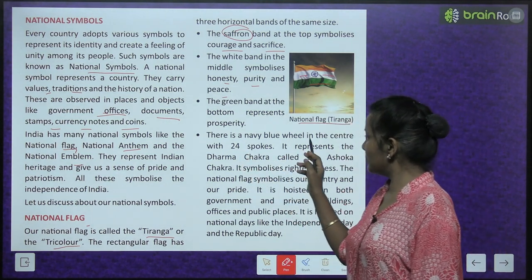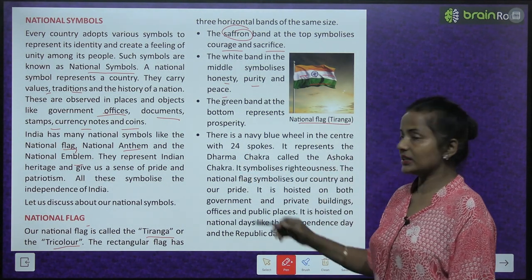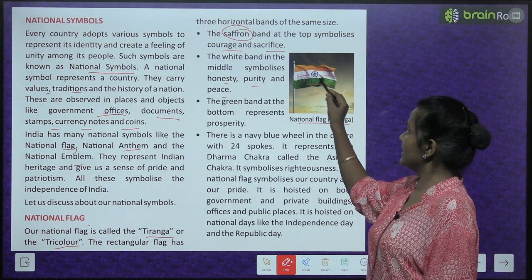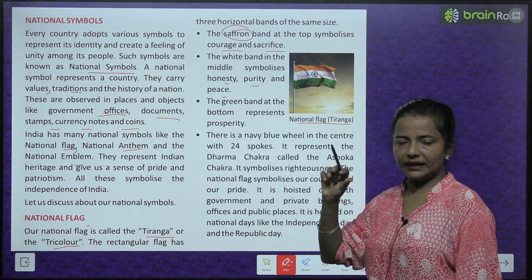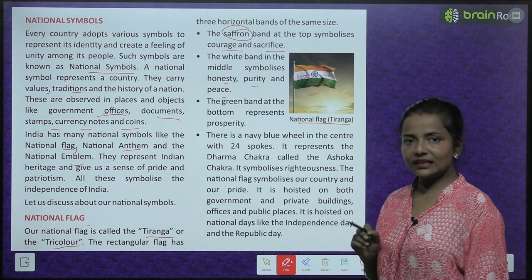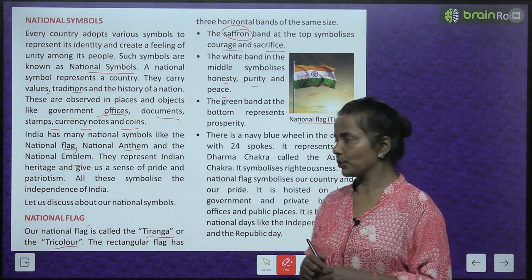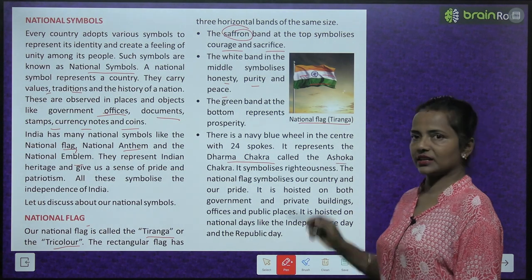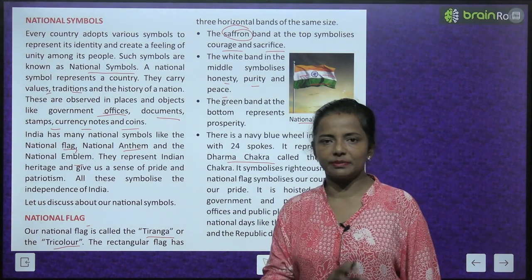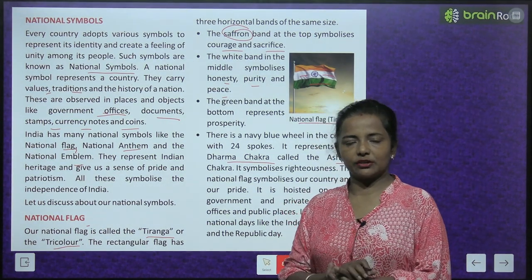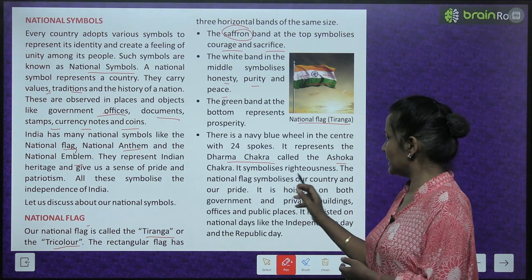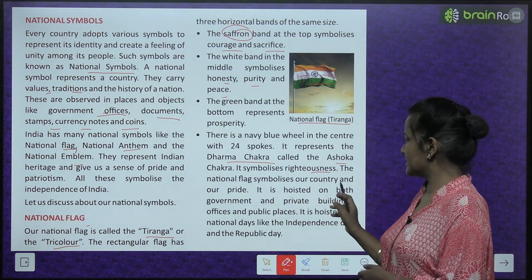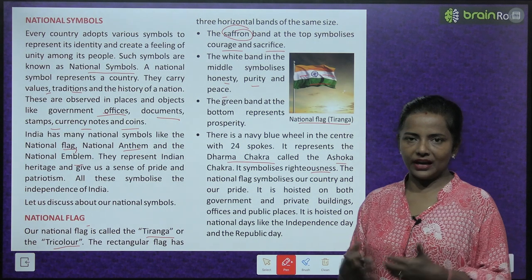There is a navy blue wheel in the center of the white band with 24 spokes. It represents the Dharm Chakra, also called the Ashok Chakra, which symbolizes righteousness. The national flag symbolizes our country and our pride.